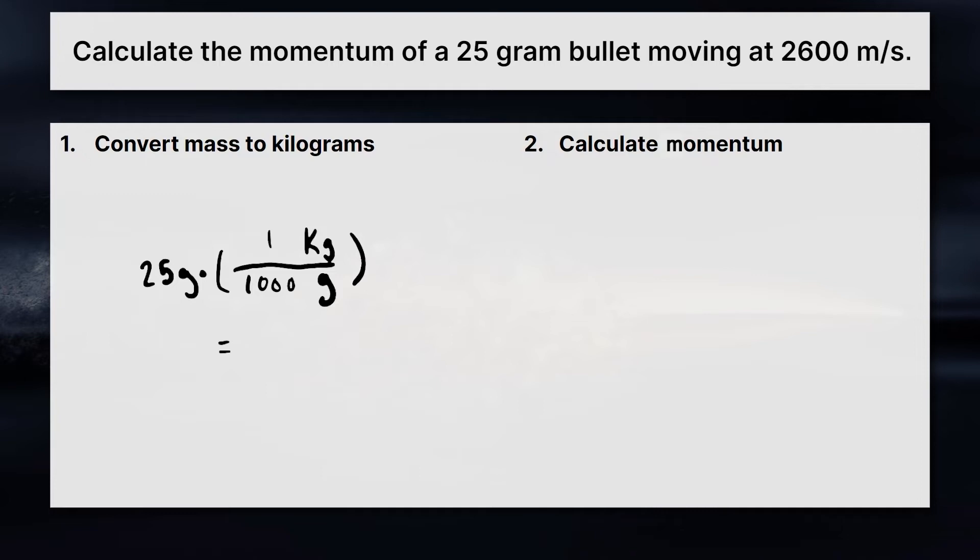So basically, the math we're actually doing here is 25 grams divided by 1000 grams. And that's going to get rid of their grams there. Okay, so when we do that division, we'll get 0.025 kilograms. That's the mass. So we've just solved for the mass of the bullet in kilograms.